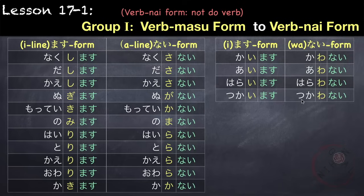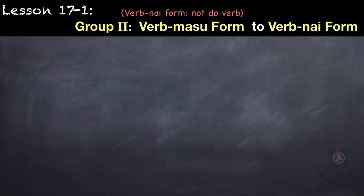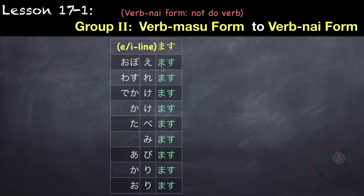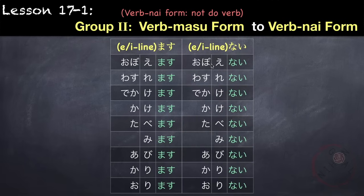For verbs that belong to group two, we simply change masu to nai. Such as: oboemasu → oboenai, wasuremas → wasurenai, dekakemasu → dekakenai, kakemasu → kakenai, tabemasu → tabenai, mimasu → minai, abimasu → abinai.